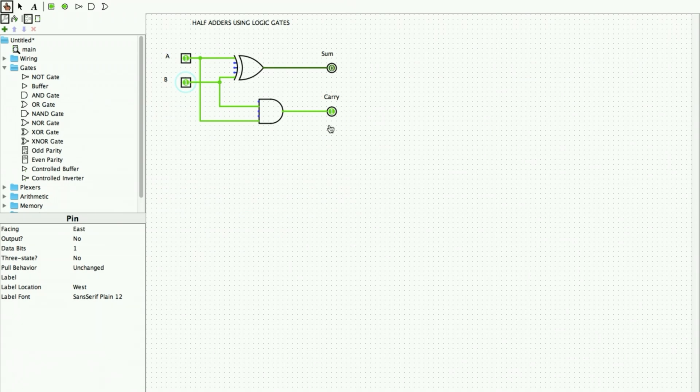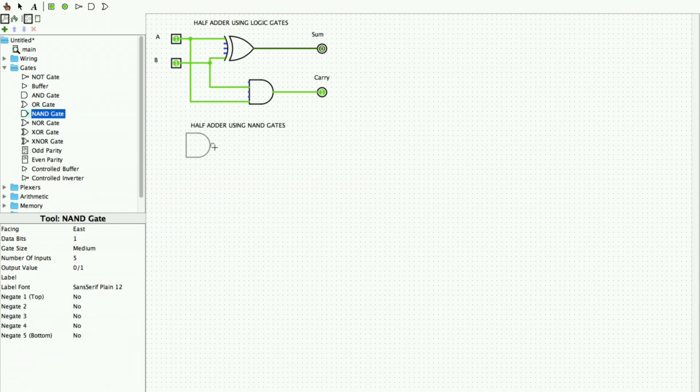So that's all, my half adder using logic gates is done. The same procedure can be used for performing or implementing half adder using NAND gates and NOR gates only.